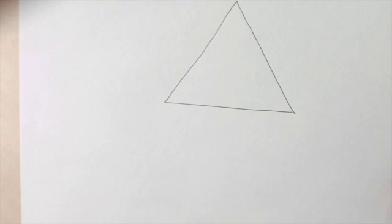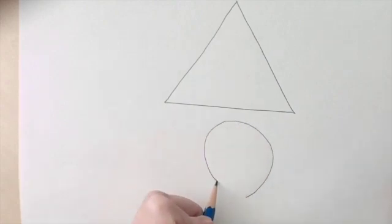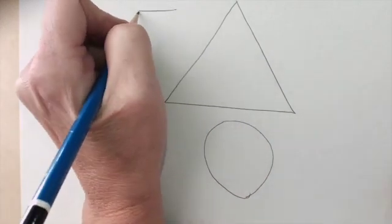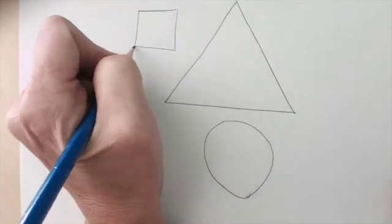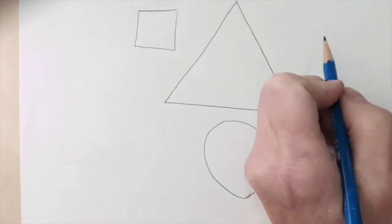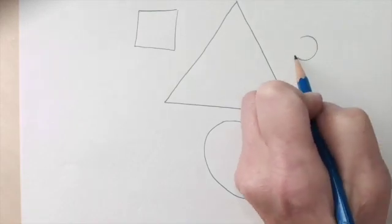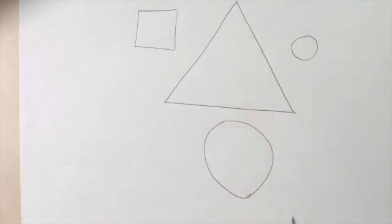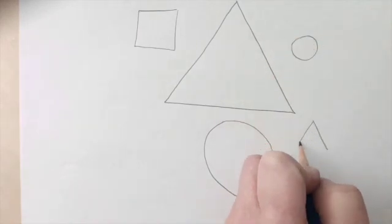To make a shape we start with a line and connect all the sides. Joining the lines together will form a shape.